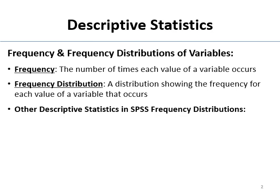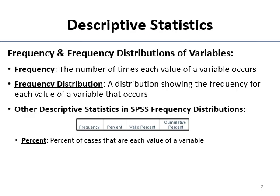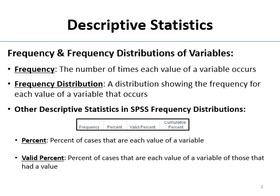When you do frequency distributions in SPSS, you get some other goodies. You can see here's the header. So we get percent — that's just the percent of cases that have each value of the variable. So if there's 100 folks in the class and 24 have red hair, that would be 24%. The valid percent is usually the same as percent. It is the percent of cases that have each value of the variable of those who actually had a value — so it excludes folks who didn't respond or gave a missing response. The valid percent is the percent of those who gave a valid response, whereas the percent is the percent of all responses, whether they were valid or not.